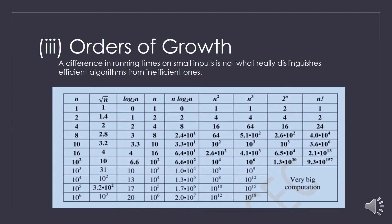Now let us learn about order of growth. Order of growth gives us the relationship between the input size and the running time of an algorithm. In the table, the rows represent the input size and the columns represent the running time. Based on the input size, we can see what the running time is.